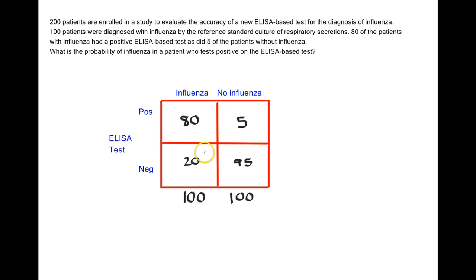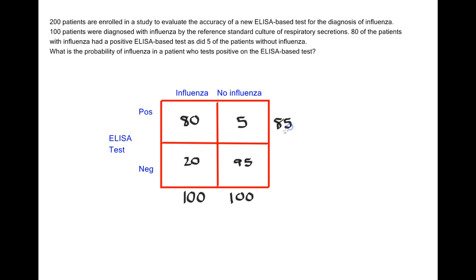In a previous video, we calculated sensitivity and specificity, and those went vertically. In predictive values, they're actually going to go horizontally across the two by two table. So I'm going to add up these numbers over here as well — 85 on the outside here, and 115 on the side over here.